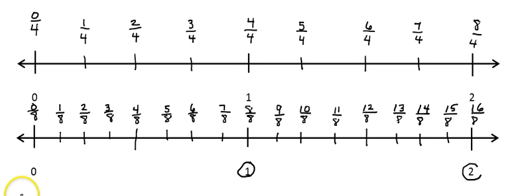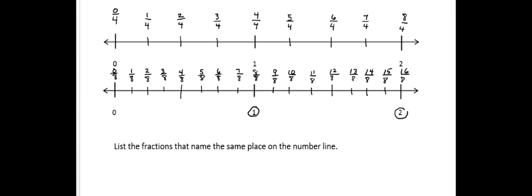And at the 2 whole mark, I have 16 eighths, because it takes 8 to make a whole, and I have 2 wholes, that would give me 16 eighths. The next step is to list the fractions that name the same place on the number line. And there's quite a few of those, so I'll just point out a couple.